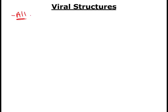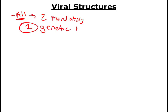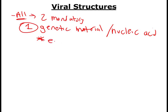Let's talk about the structure of viruses — it's actually pretty simple. All viruses have two mandatory components. The first is some sort of genetic material or nucleic acid, which contains all the genes the virus needs to make more copies of itself. An important rule: a virus can have either DNA or RNA, but never both.